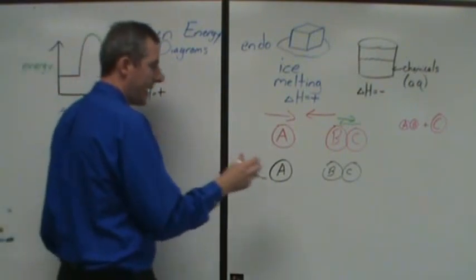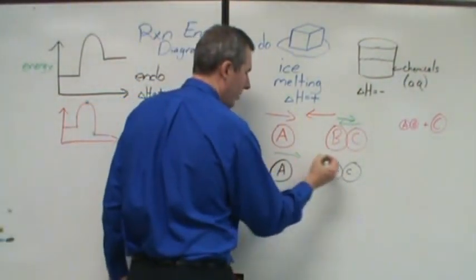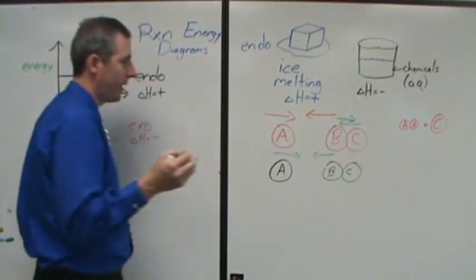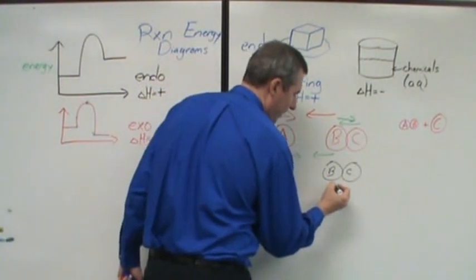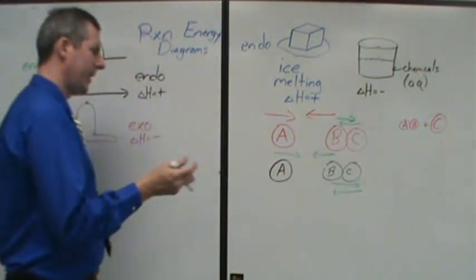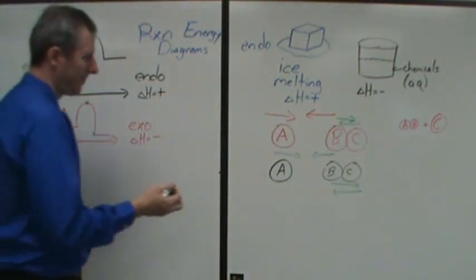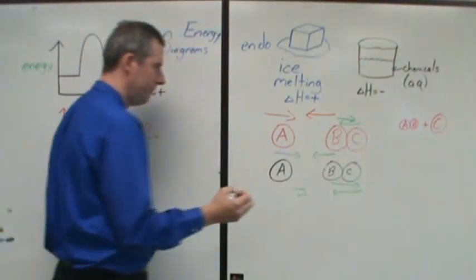Now if we contrast that with the second set down here, let's say these are also traveling together and they're going to hit really hard and they're moving really fast. But let's say in this case that B and C have a really strong attraction for each other. And then when A and B bond, they have an attraction for each other, but it's not as strong.